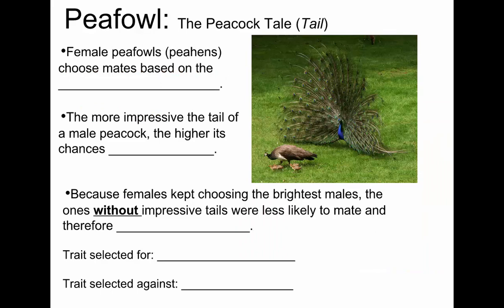One interesting example of natural selection is the pea fowl. You've probably seen peacocks at the zoo — those are the males. The female is called the peahen and they're not as showy; they don't have the very large tail. The reason for the large, showy, colorful tail of a peacock is that it's a trait that helps it attract mates. Female pea fowls choose a mate based on their tail display — the color of the feathers, the size. The more impressive the tail, the higher its chances of reproducing.